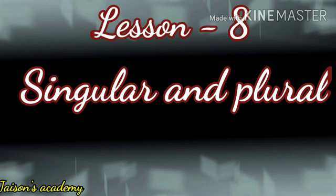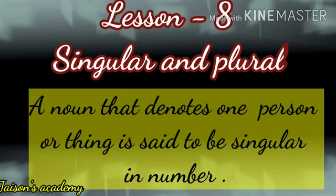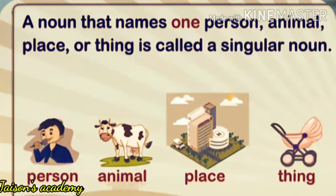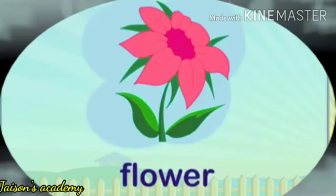Lesson number 8 — Singular and Plural. Now, what is singular? A noun that denotes one person or thing is said to be singular in number. That means a noun refers to the name of one person, animal, place, or thing. These are called singular nouns. For example: boy, cat, house, and flower — these are singular nouns.